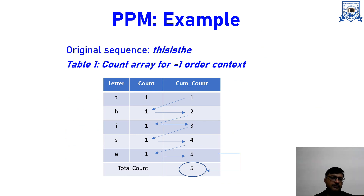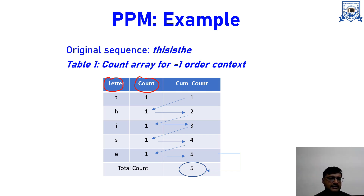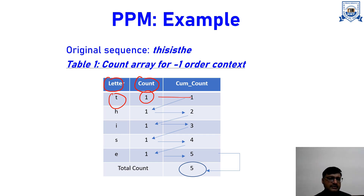The first table is the count array for the minus 1 order context. This is simple — we consider every letter as occurring for the very first time. We track three things: the letter, the count of how many times it occurs, and the cumulative count. The cumulative count is the current count plus the previous cumulative count. For example, D count is 1, H count is 1, and so on, with cumulative counts of 1, 2, 3, and so on. The total count is the cumulative count of the very last entry.